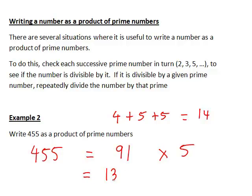Therefore, 455 is 13 times 7 times 5. Since 13 is a prime number, this is how we write 455 as a product of primes.